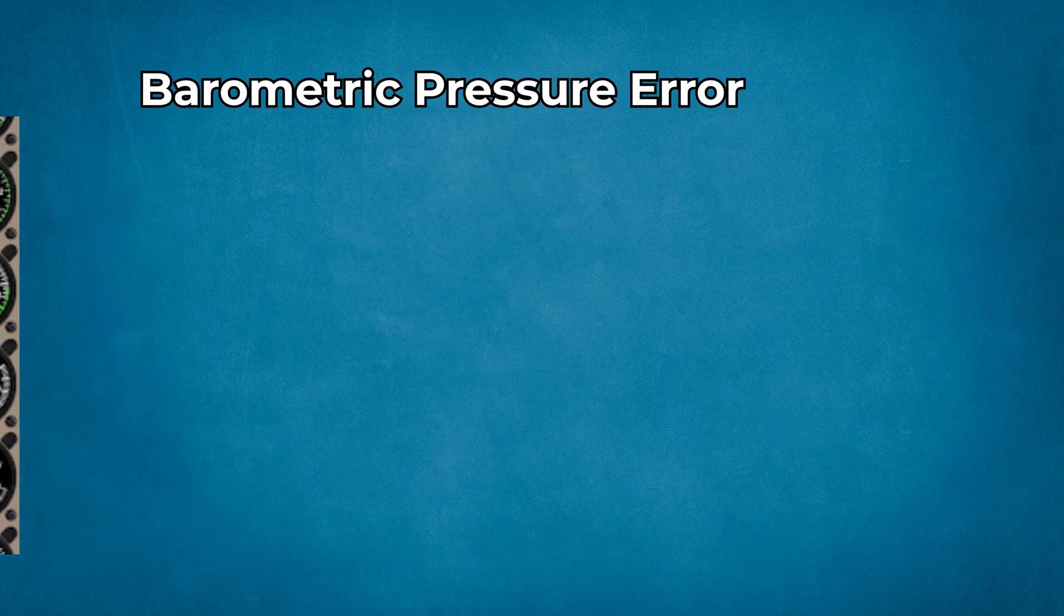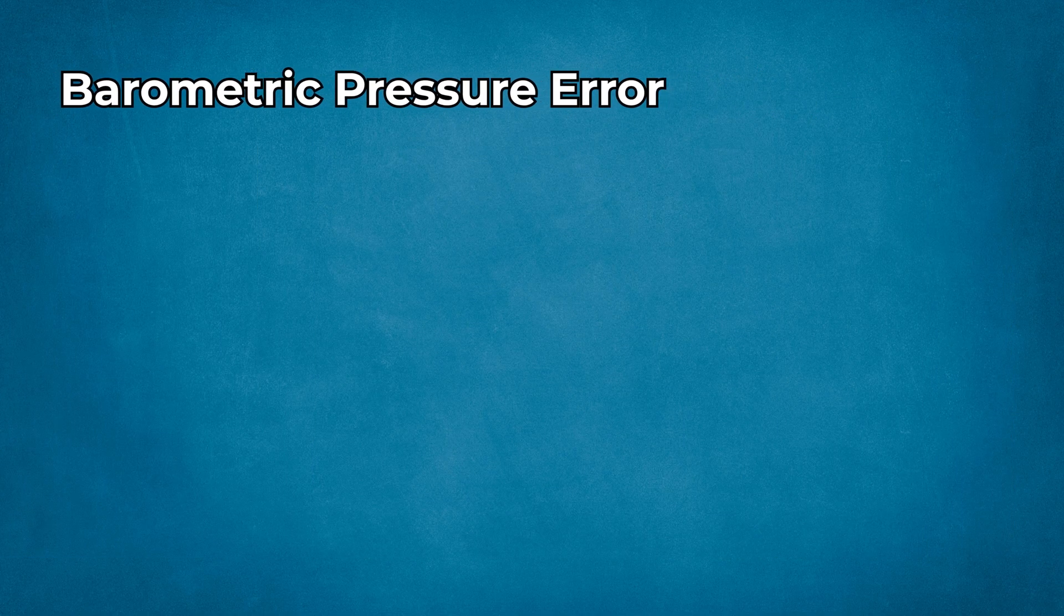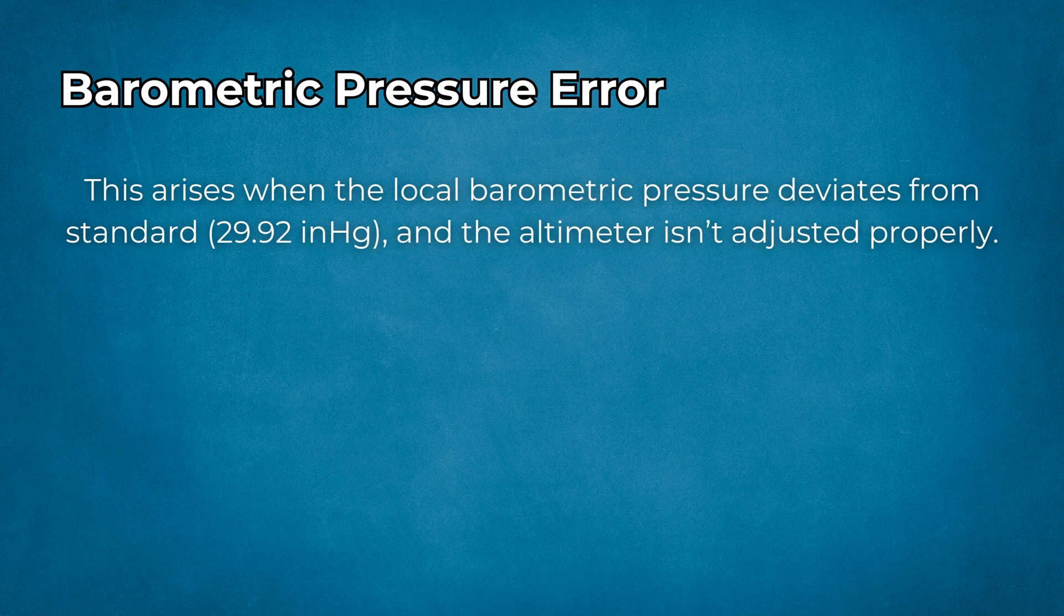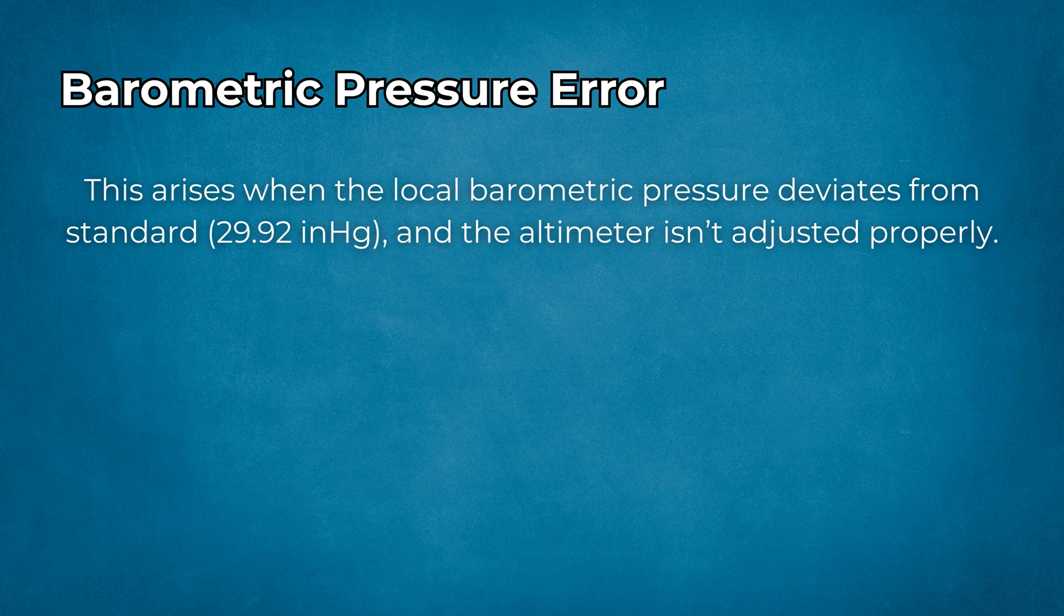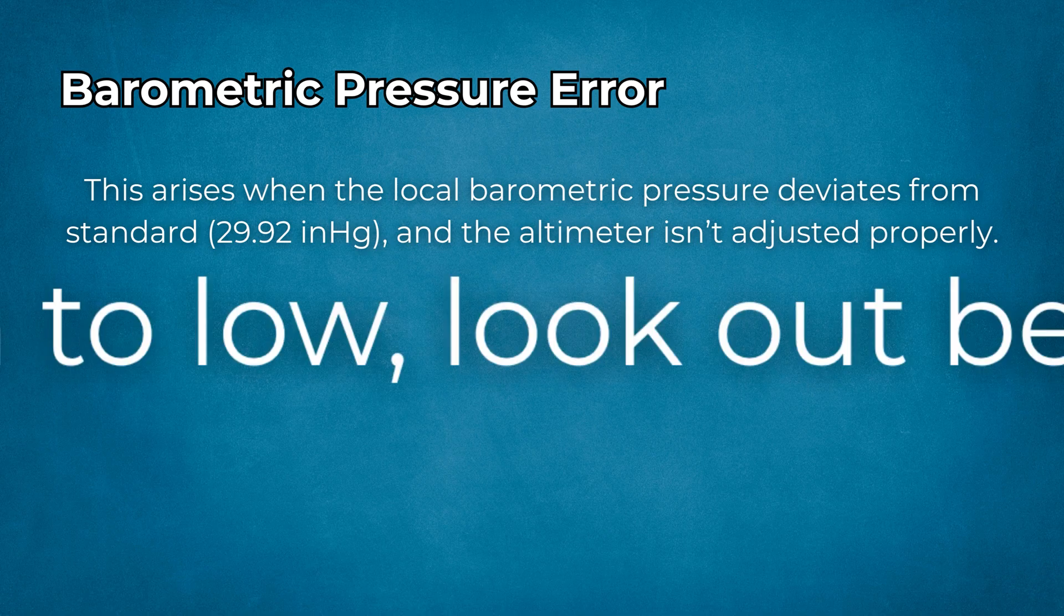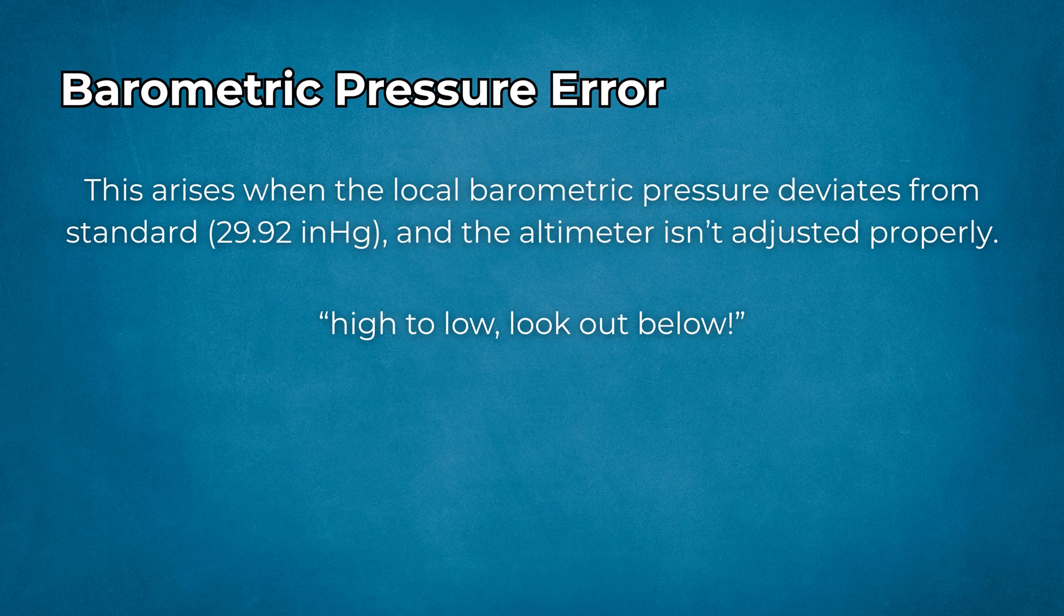Two, barometric pressure error. This arises when the local barometric pressure deviates from standard 29.92 and the altimeter isn't adjusted properly. A common mnemonic: high to low, look out below. Flying into lower pressure makes you lower than your altimeter reads.